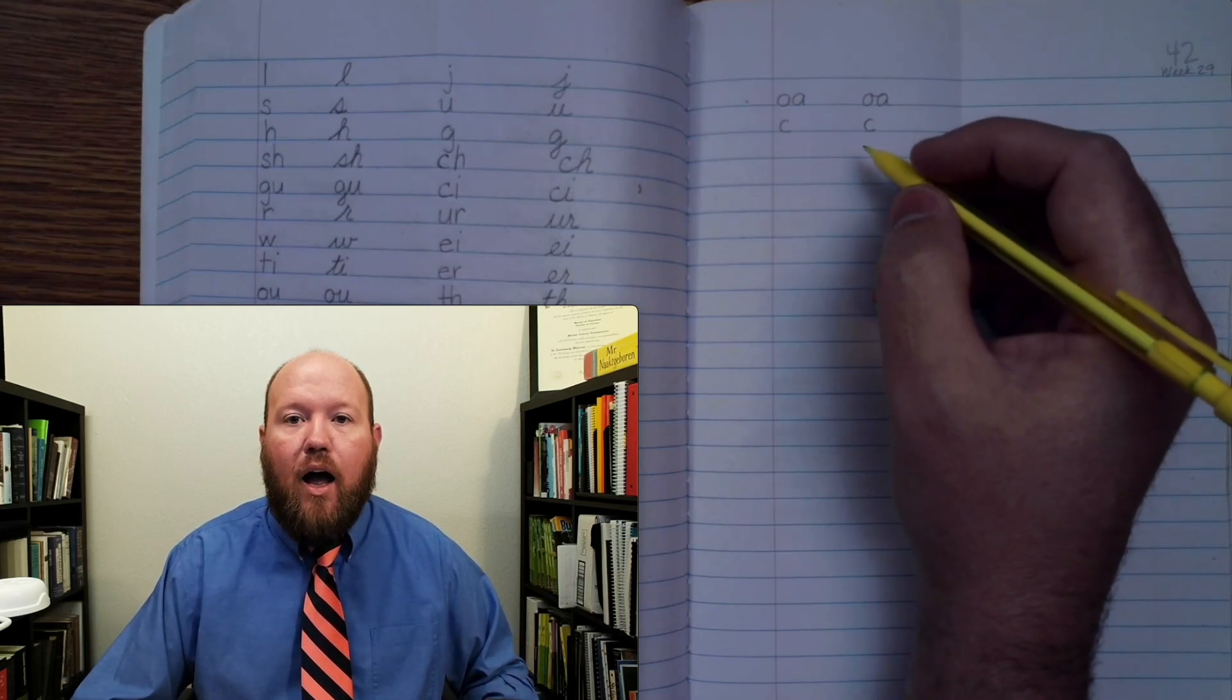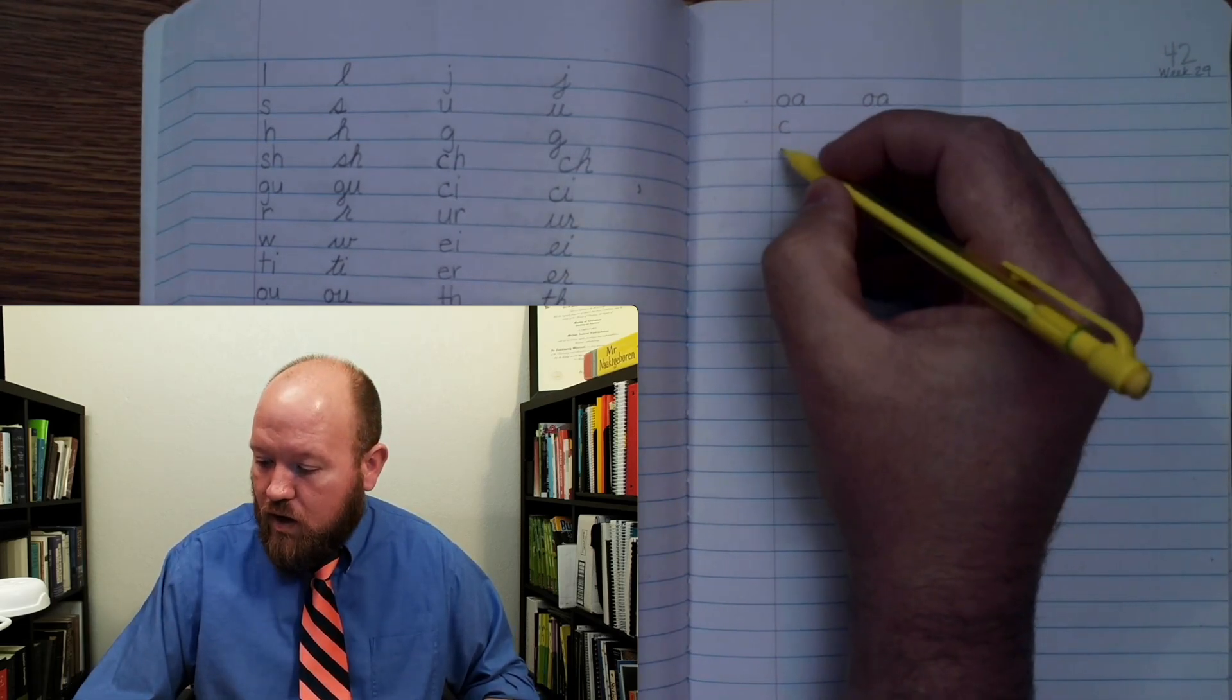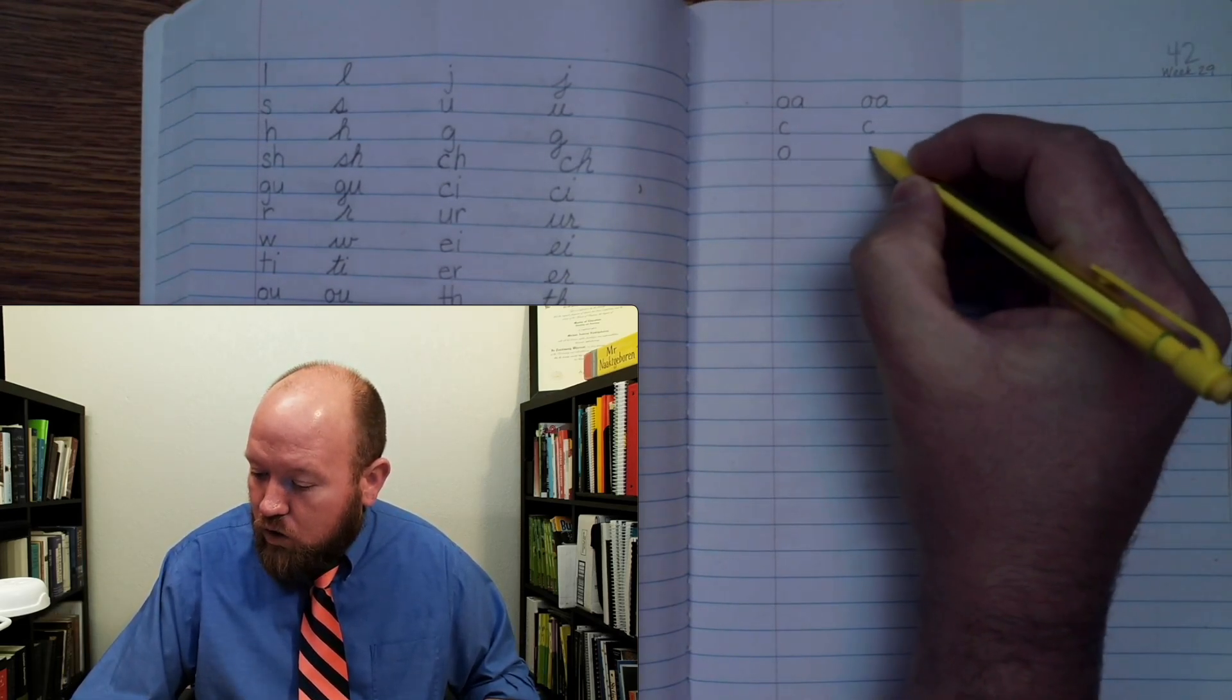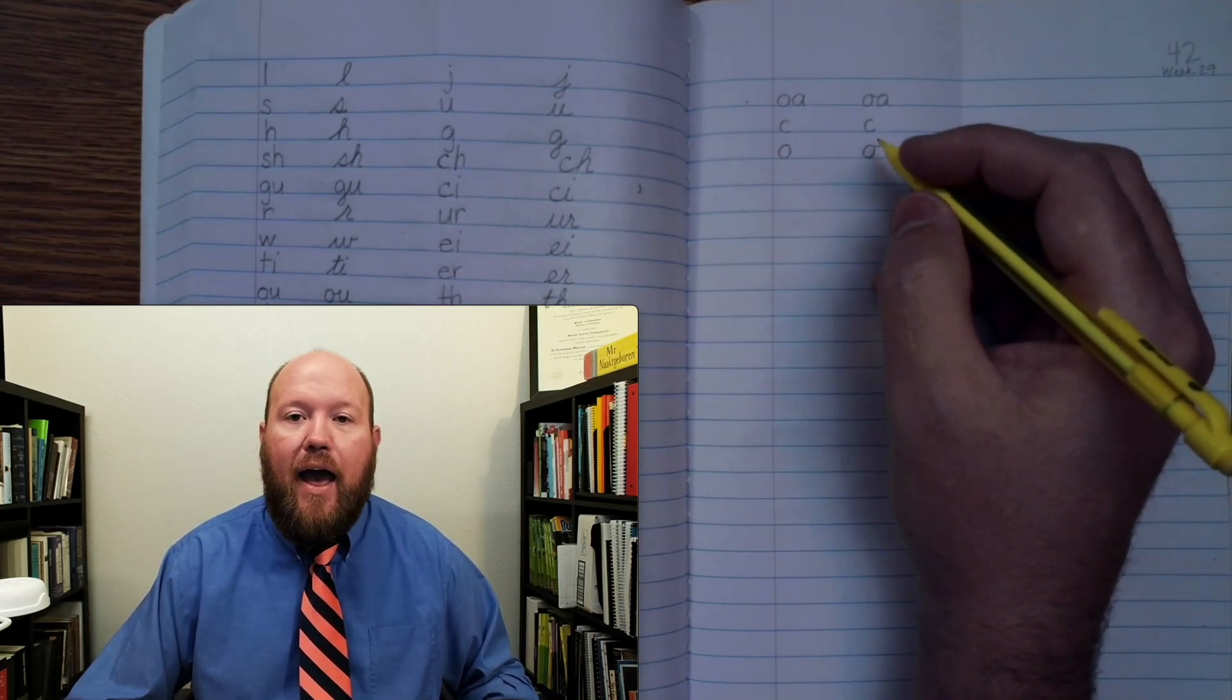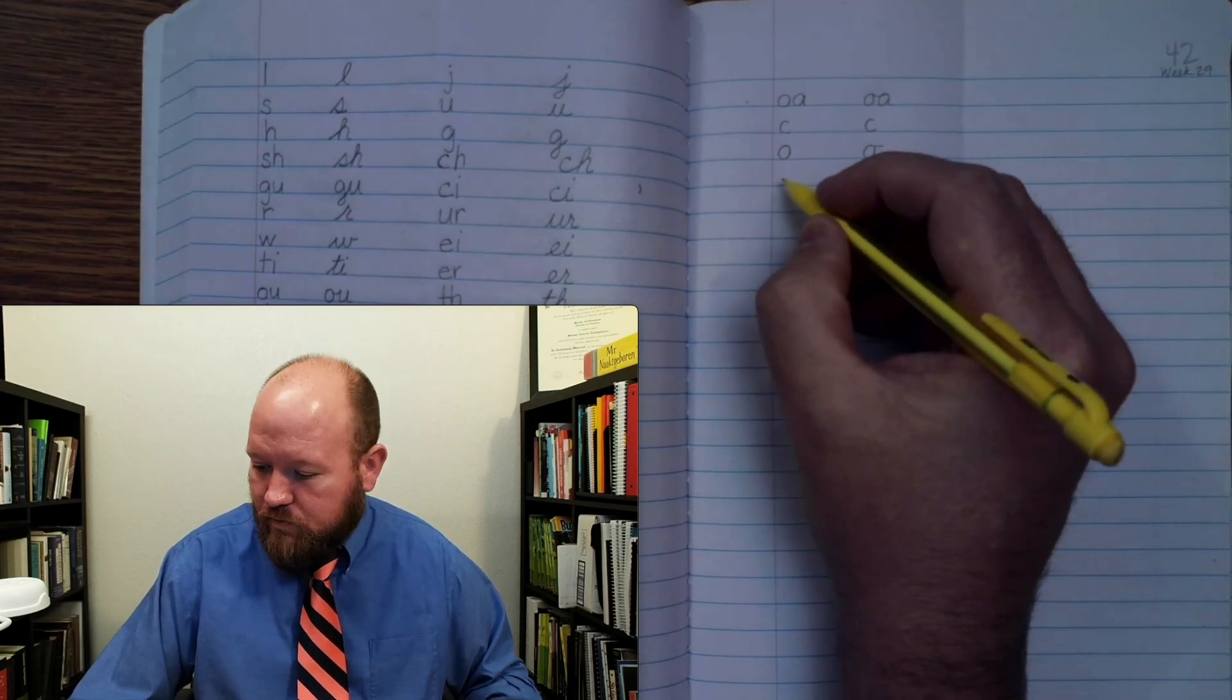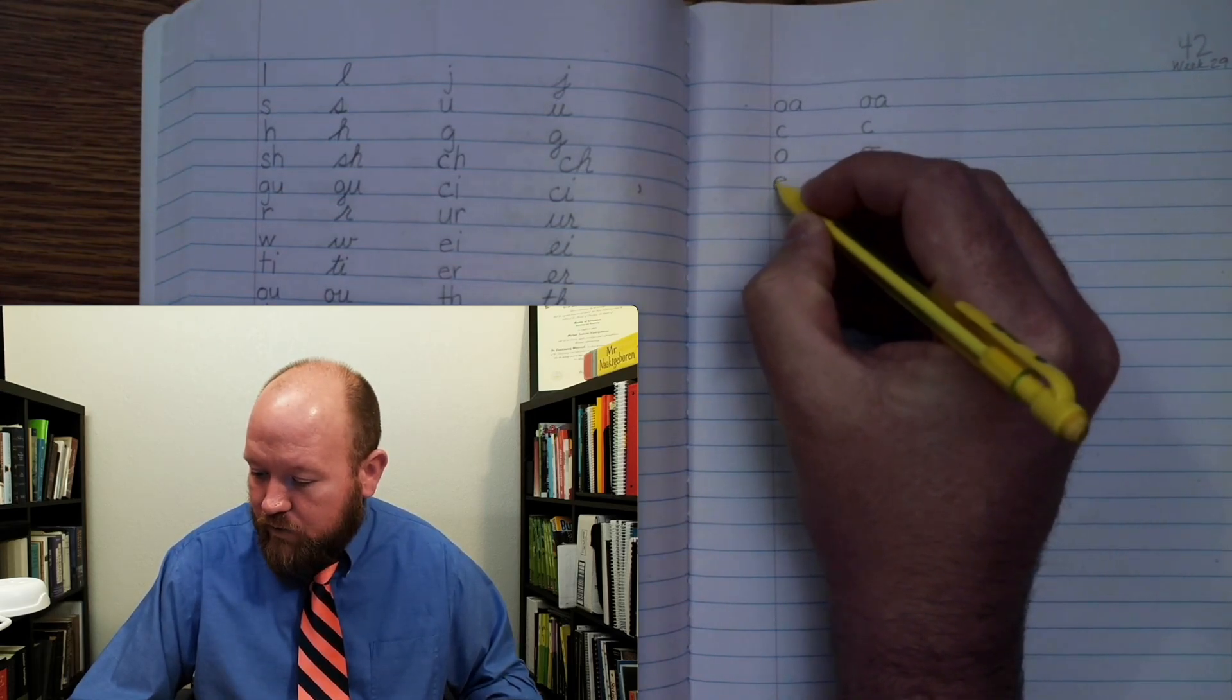Next one, ah, oh, oo, ah, oh, oo. Next one, a, four letters. A, four letters.